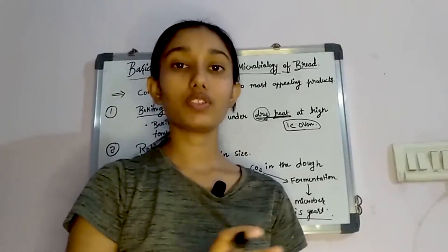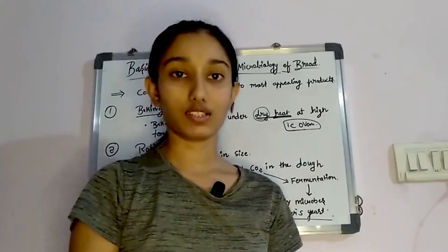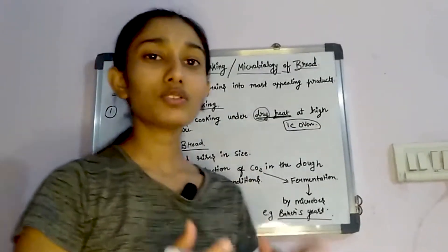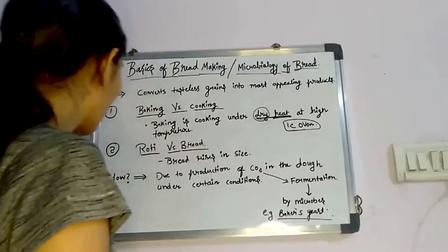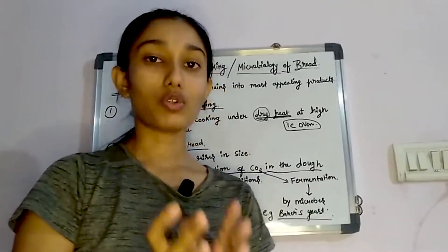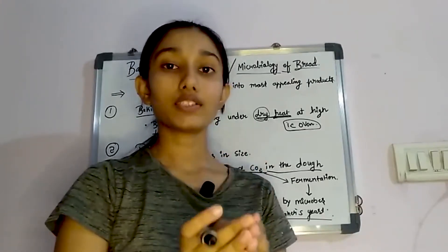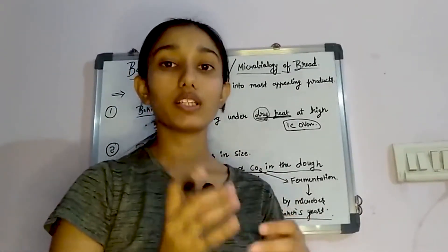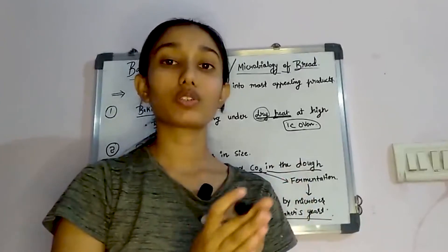The roti surface is flat, but if we see the bread, it has sponginess. Bread increases in size — the volume is increased. This is due to production of CO2 in the dough. When CO2 is produced in the dough, gas increases and the size of the dough increases. The final product — that is bread — also gets its spongy structure from the production of CO2.